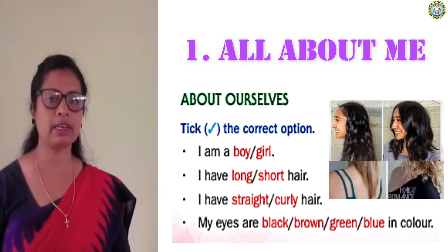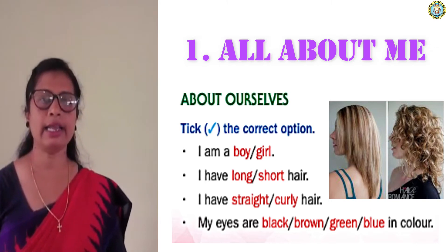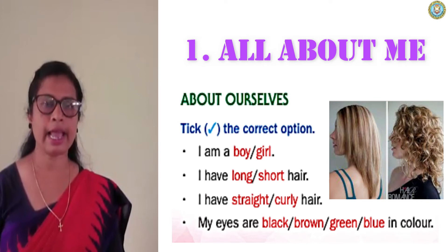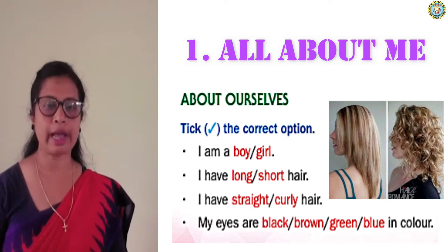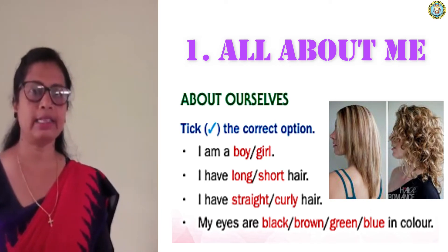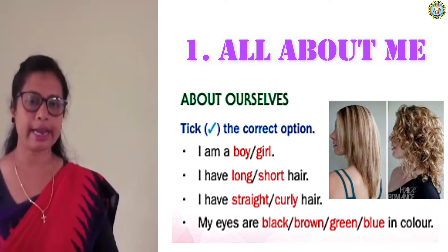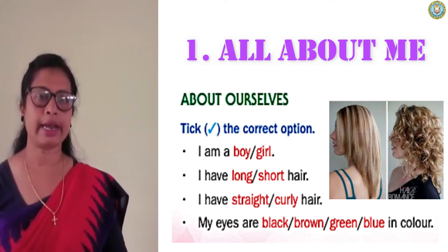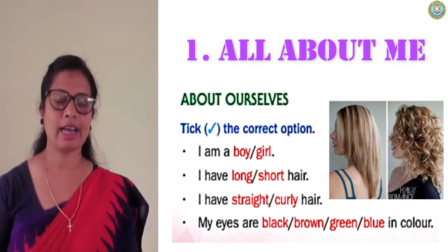Look at question number three: I have straight or curly hair. Curly means gumbur poodl. What type of hair do you have? If you have straight hair, put a tick mark on 'straight'. If you have curly hair, put a tick mark on 'curly'.